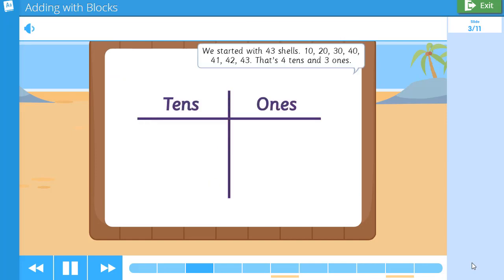We started with 43 shells. 10, 20, 30, 40, 41, 42, 43. That's four tens and three ones.